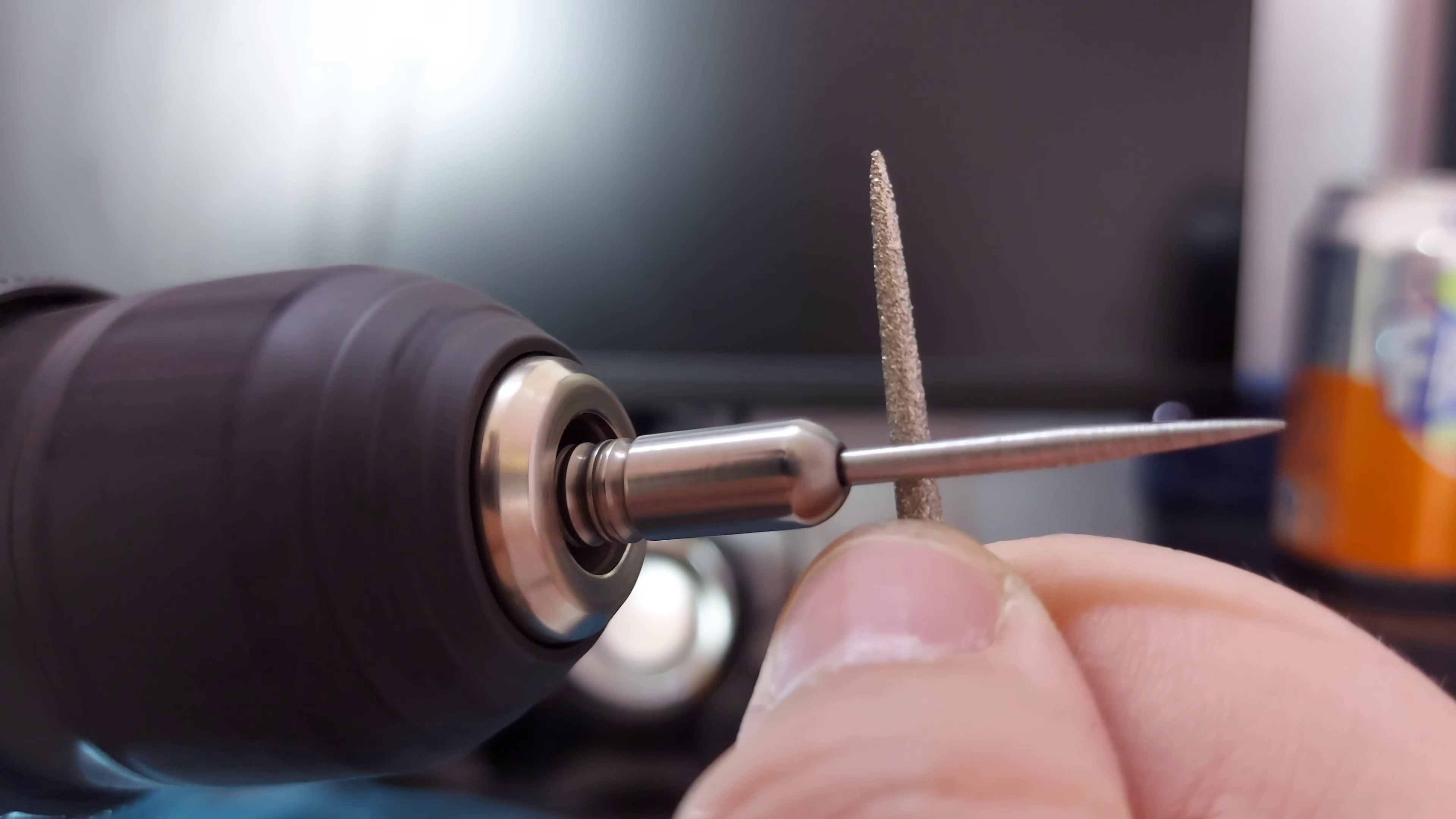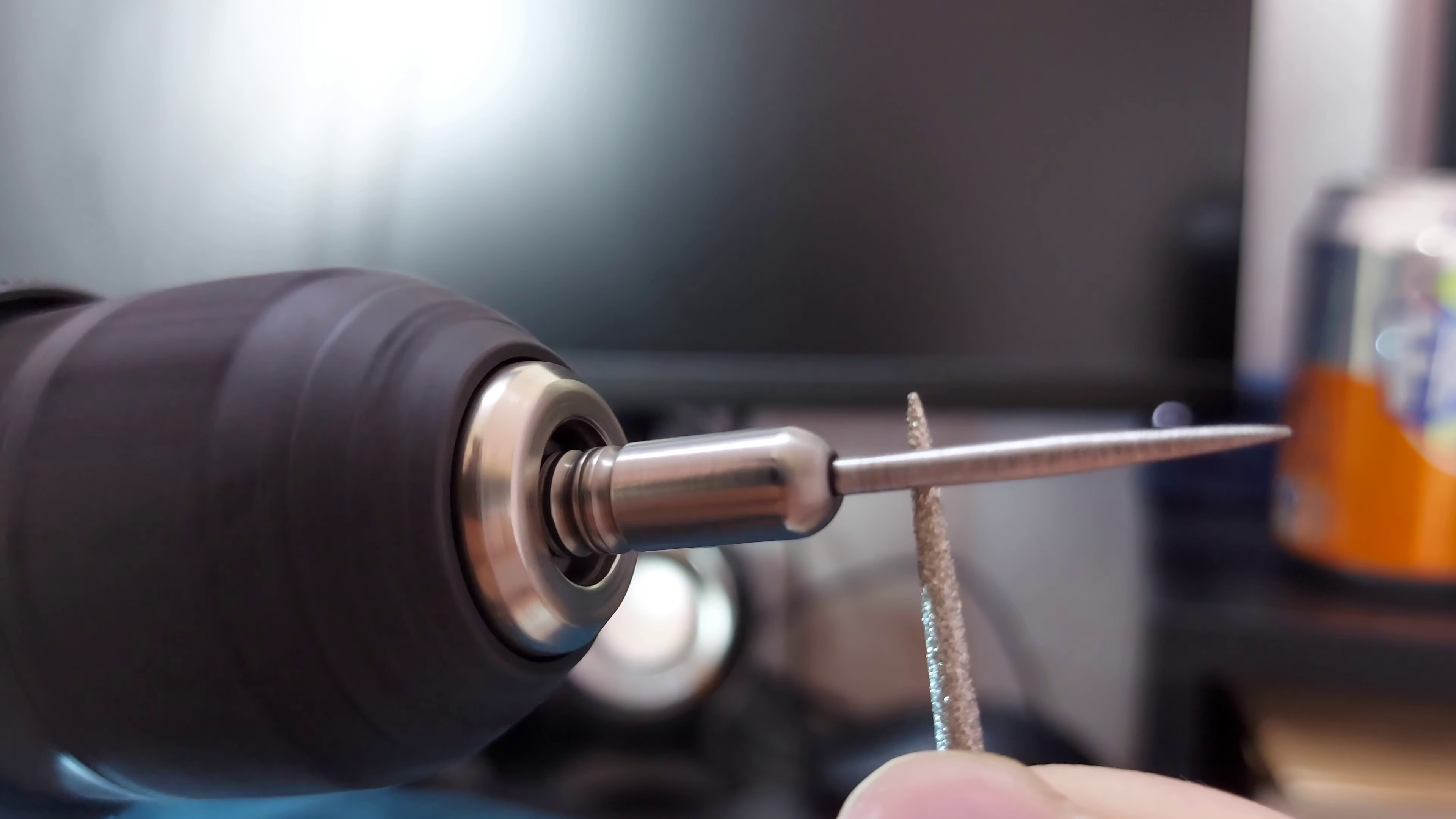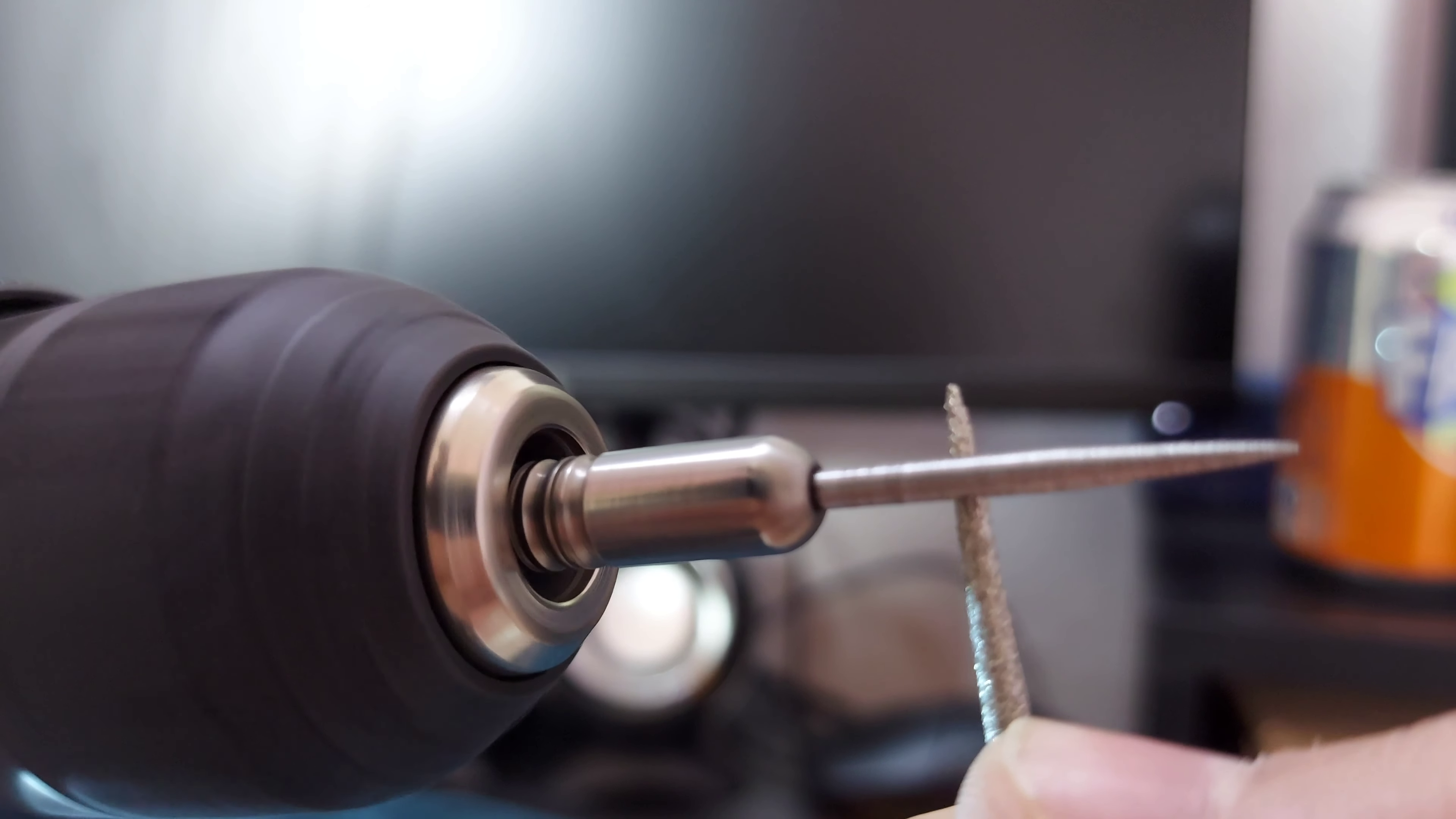After about four minutes, you should have the point nice and rough, and then you can go to using a diamond file. Now the trick to this is to try and keep it on one spot until you start to see it cutting a little groove, and then move. You can see these little black lines following it as I go further up the point.